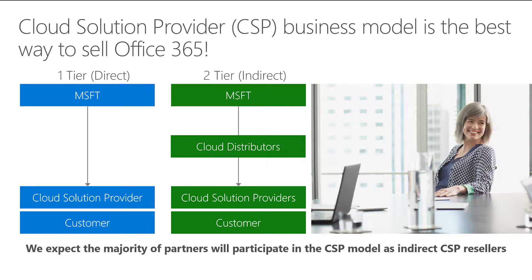There are two business modules that partners can transact through CSP. We have the one-tier or direct module, and also the two-tier or indirect module.